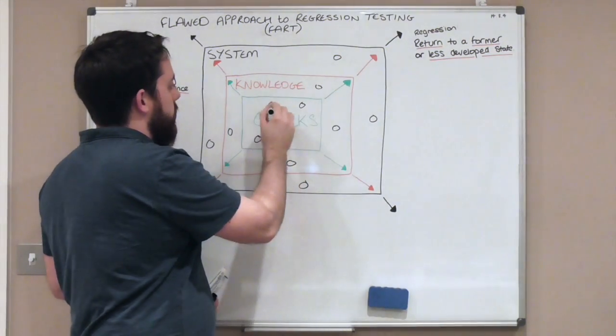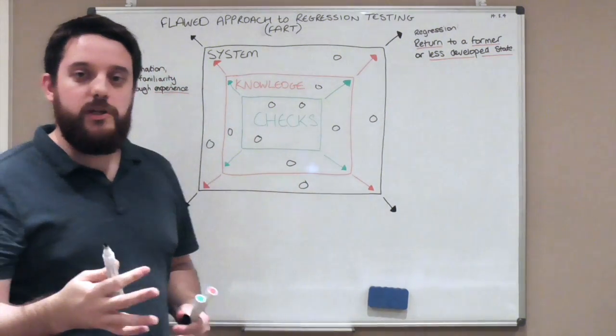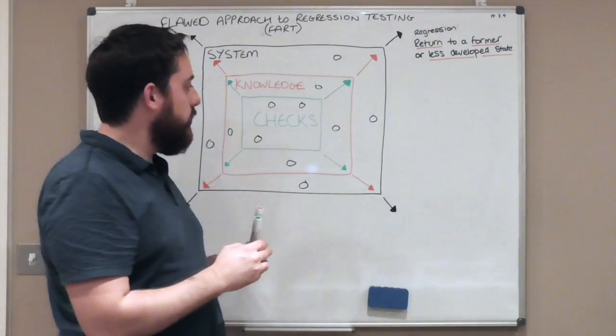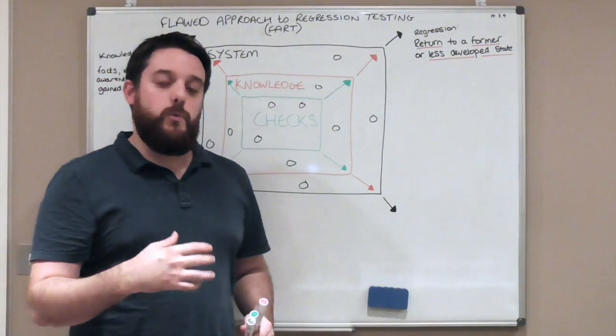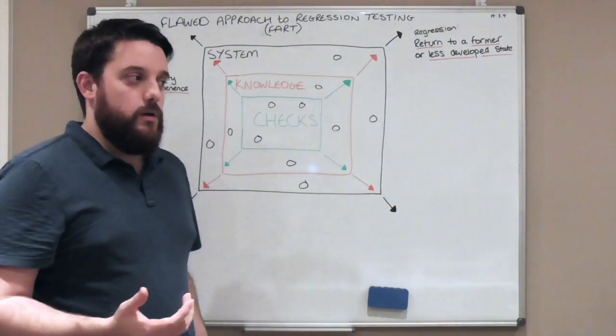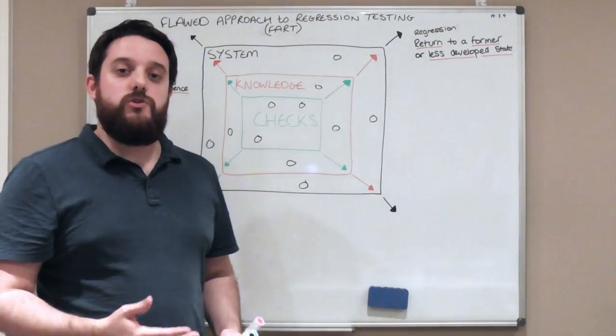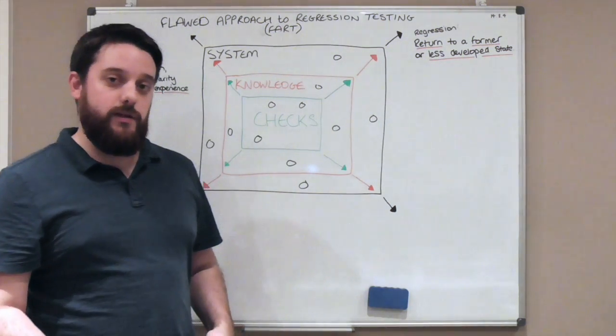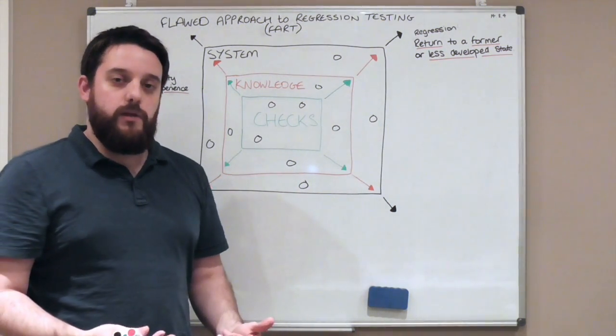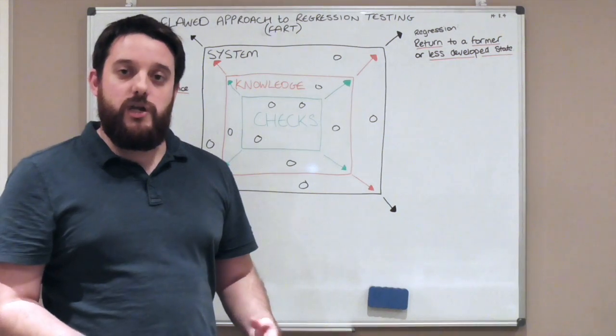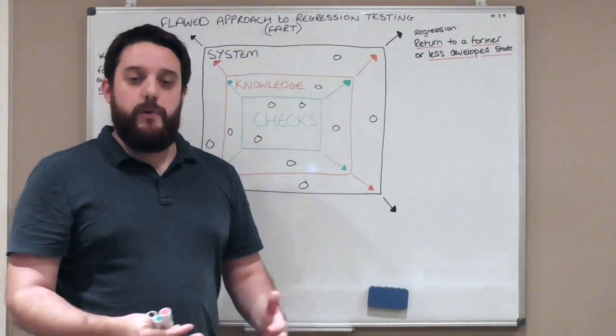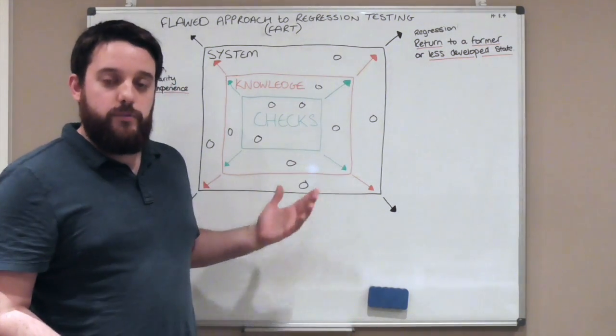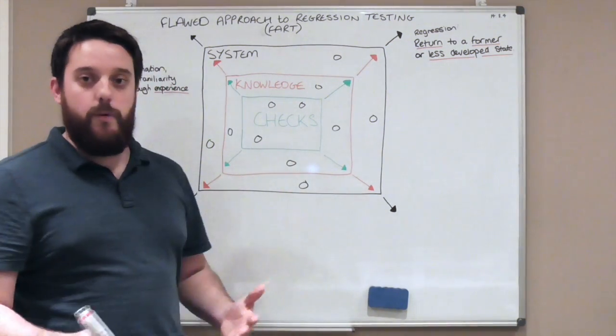Sometimes your automation will fail, and that's probably due to a change that you were not expecting. But there's also situations a lot of the time where your checks will pass even though that area has changed. It's just that the time you wrote that check, the system looked like Y, and now it looks like X. The check that you wrote may not be substantial anymore. It may not be checking the right things.